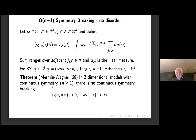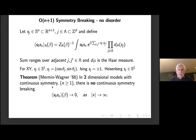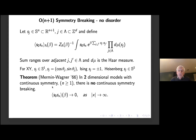For n=1, which is the XY model, there's a Kosterlitz-Thouless phase, which means the spin-spin correlation goes to zero polynomially. There's a big conjecture about what happens when the spins take values in the two-sphere. We believe, but there's no proof unfortunately, that the spin-spin correlations go to zero exponentially fast in that case, but I have nothing to say about that.